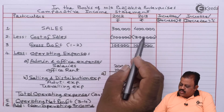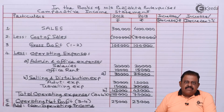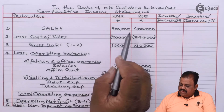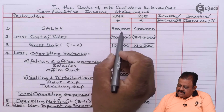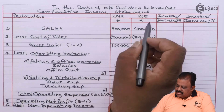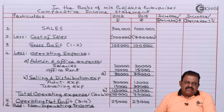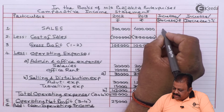We have completed the first two columns of amounts and the vertical income statement is now ready. For the comparative income statement we compare values of the first and second columns. Sales in 2012 was 3 lakhs; in 2013 it became 4 lakhs. There is an increase of 1 lakh.